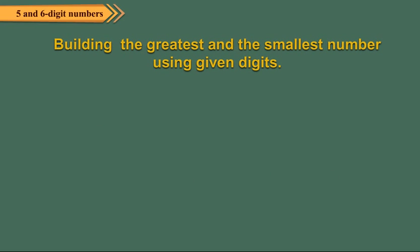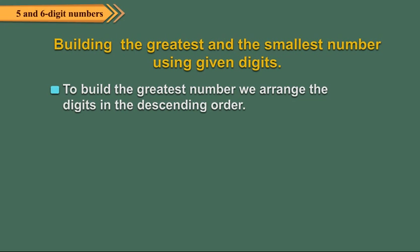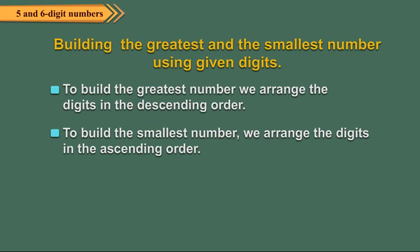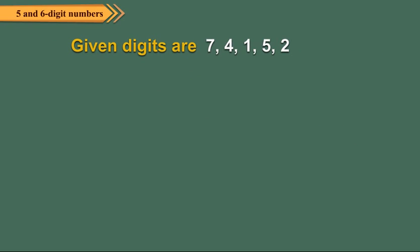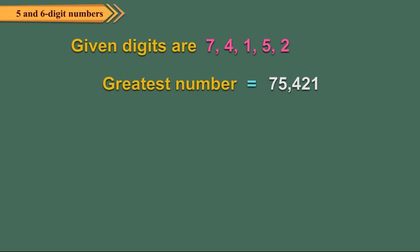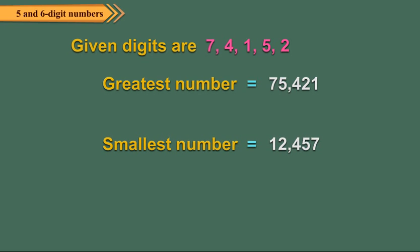Now let us discuss how to build the greatest and the smallest number using some given digits. To build the greatest number, we arrange the digits in descending order. To build the smallest number, we arrange the digits in ascending order. Let us form the greatest and smallest 5-digit numbers using the digits 7, 4, 1, 5, and 2. Arranging in descending order gives the greatest number 75421. Arranging in ascending order gives the smallest number 12457.